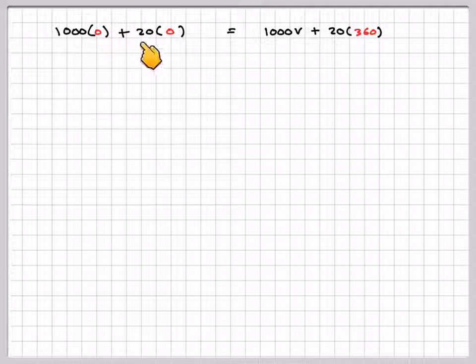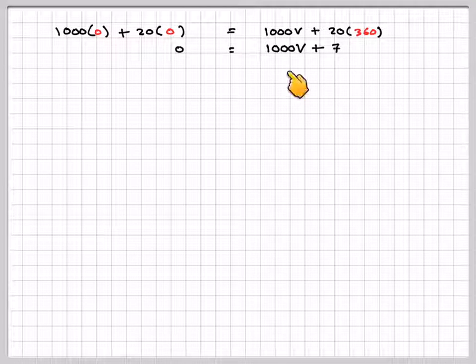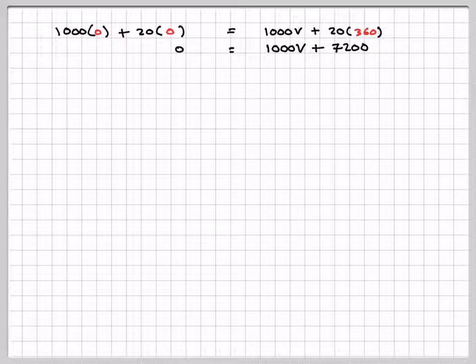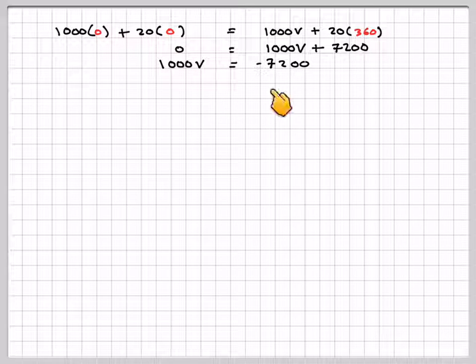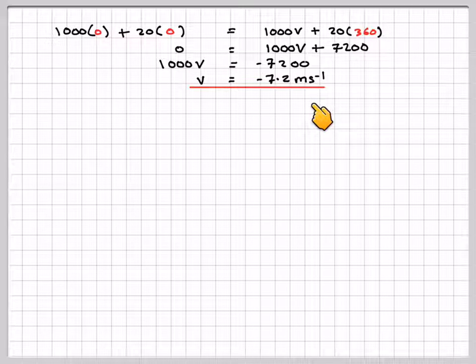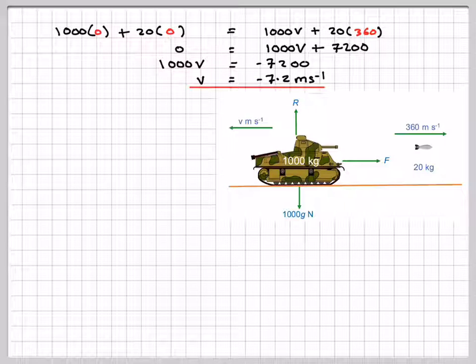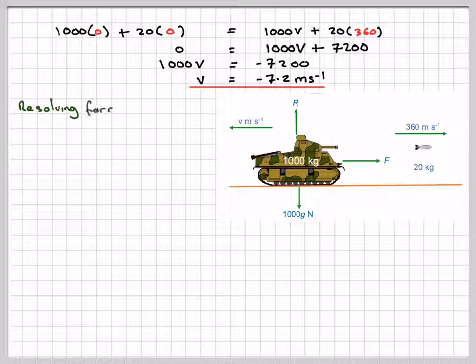On this side we're going to get 0, so we've got 0 equals 1,000V plus 7,200. 1,000V will equal minus 7,200, so V will equal minus 7.2 meters per second. The tank will move backwards at a velocity of minus 7.2 meters per second.